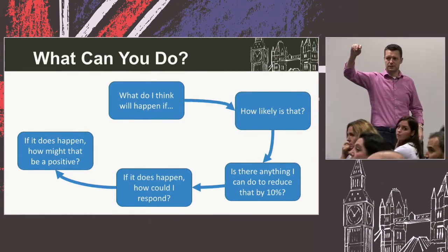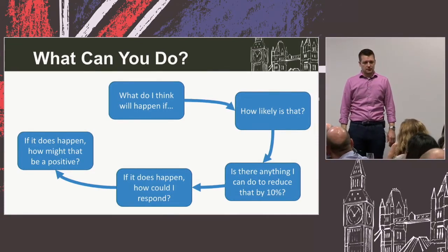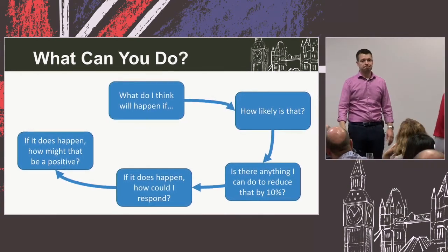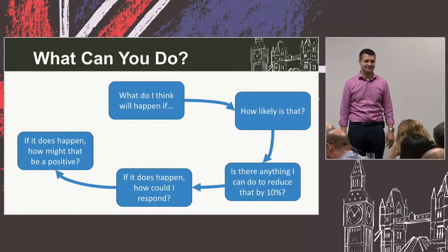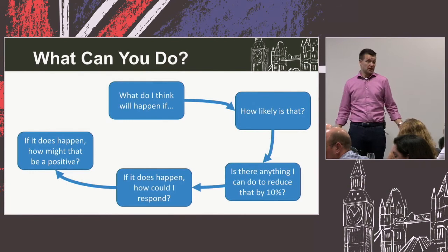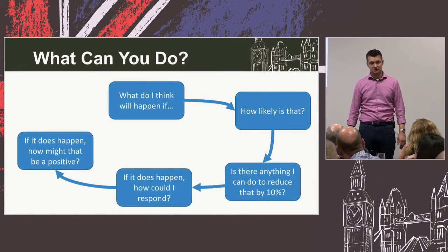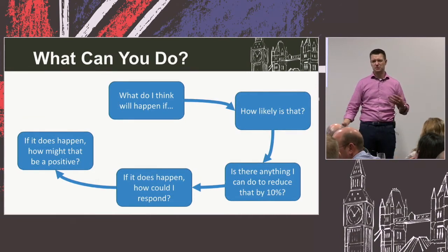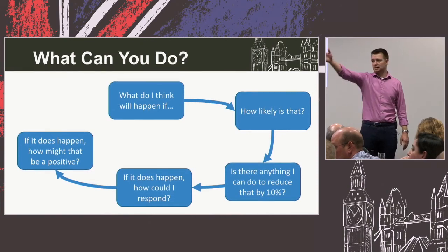Q: Is there a specific reason why it's 10% and not 5% or 30%? A: I picked 10% because of my culture — it's a small, manageable, round number and people are attracted to round numbers. But honestly I'd take 1%. It's about any kind of forward momentum. With the people I work with, 10% seems achievable without being too daunting.